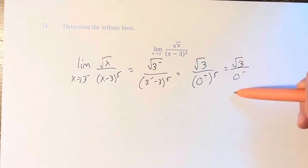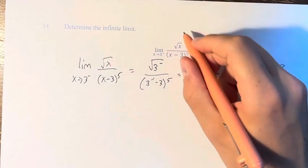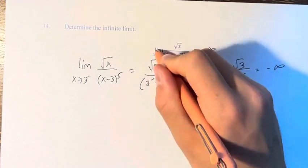Positive number divided by numbers approaching 0 equals infinity or negative infinity. Positive divided by negative means it's negative infinity, and that is the value of the infinite limit.